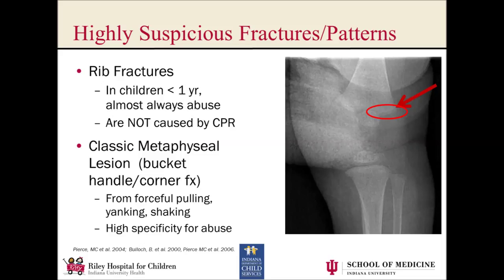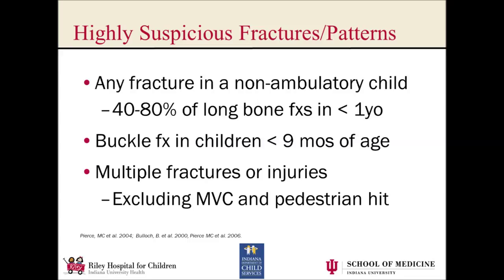Any fracture in a non-ambulatory child is concerning. In kids under one, long bone fractures are abuse in 40 to 80% of cases — but it's important to keep in mind that in the rest of cases it is truly accidental injury, something we always need to be cognizant of when interacting with caregivers. Buckle fractures are very, very common — children fall, land on an outstretched hand, and develop a buckle fracture. But the fall on the outstretched hand is a protective reflex that only occurs as children get older. So in young kids, particularly under nine months of age, this is not yet developed, meaning buckle fractures in this age group are concerning. Multiple fractures or injuries in a child without a compelling mechanism should also make us concerned.